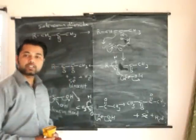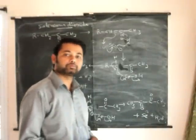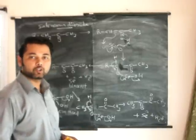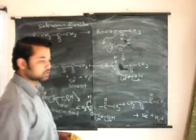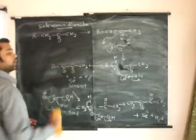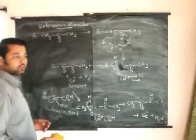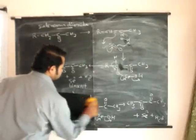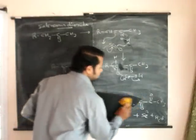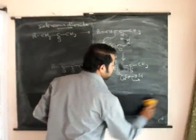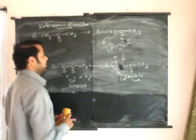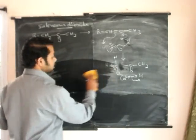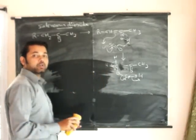Now let us see some examples of this oxidation of active methylene compounds. So this is the mechanism involved in oxidation of active methylene groups with selenium dioxide. Now let us see some of the examples.